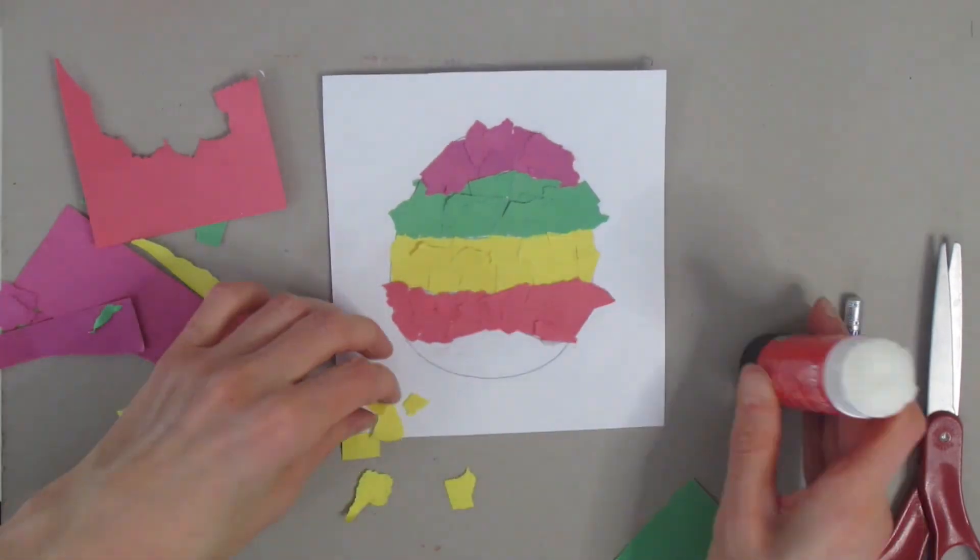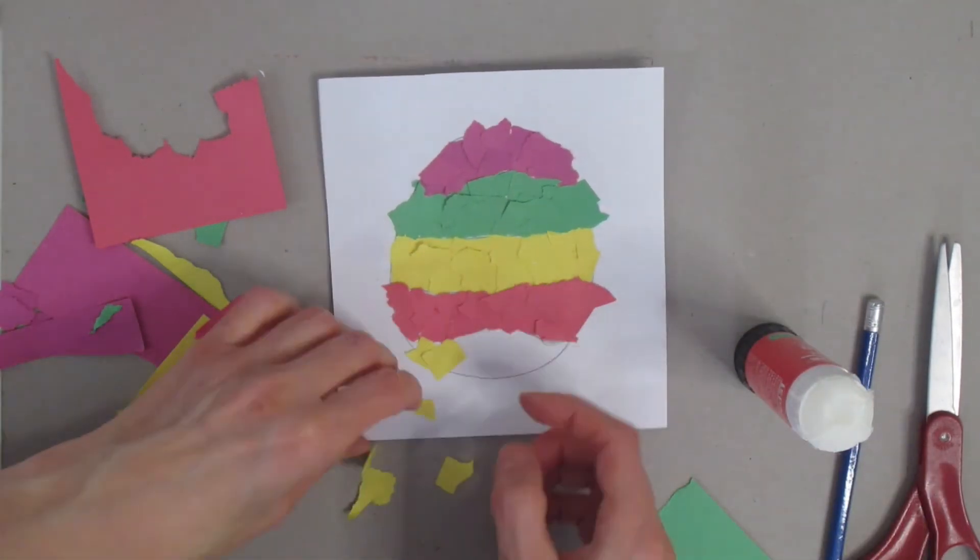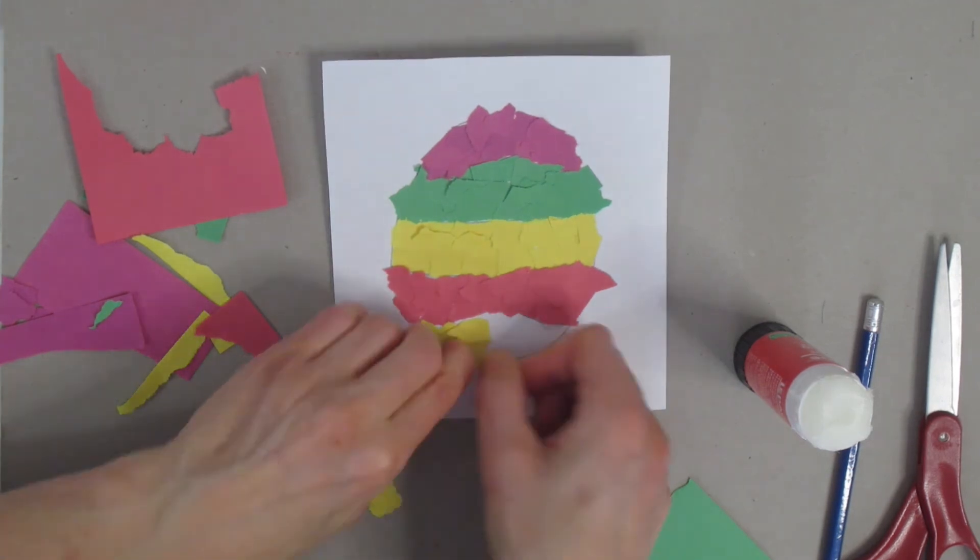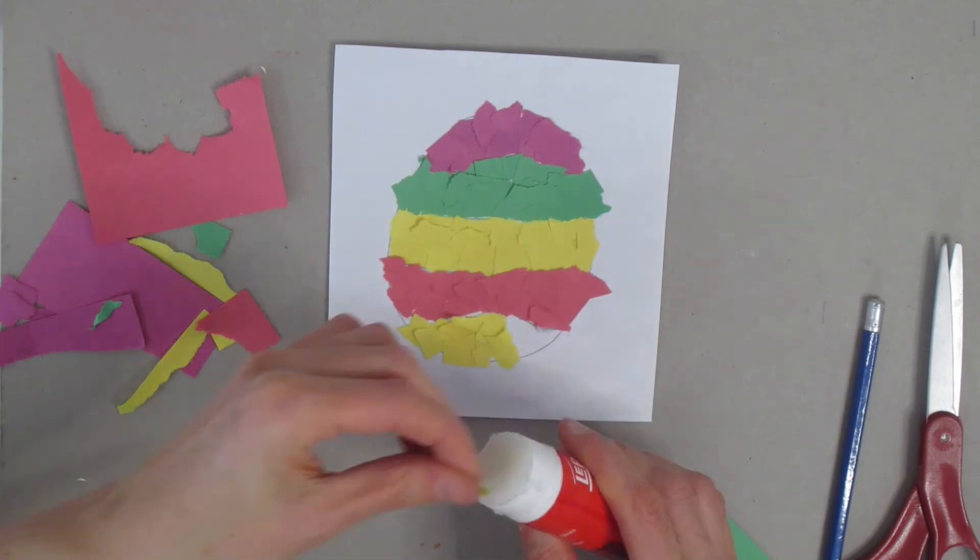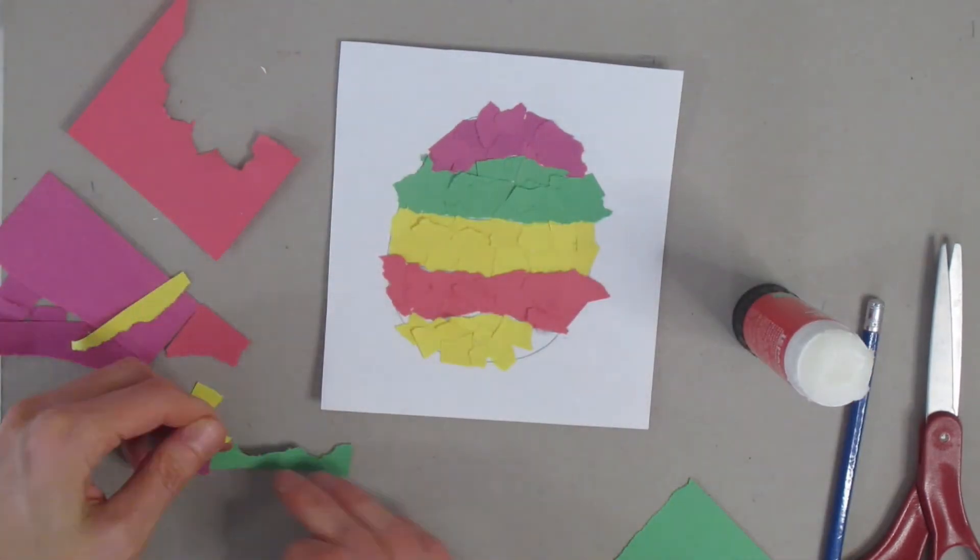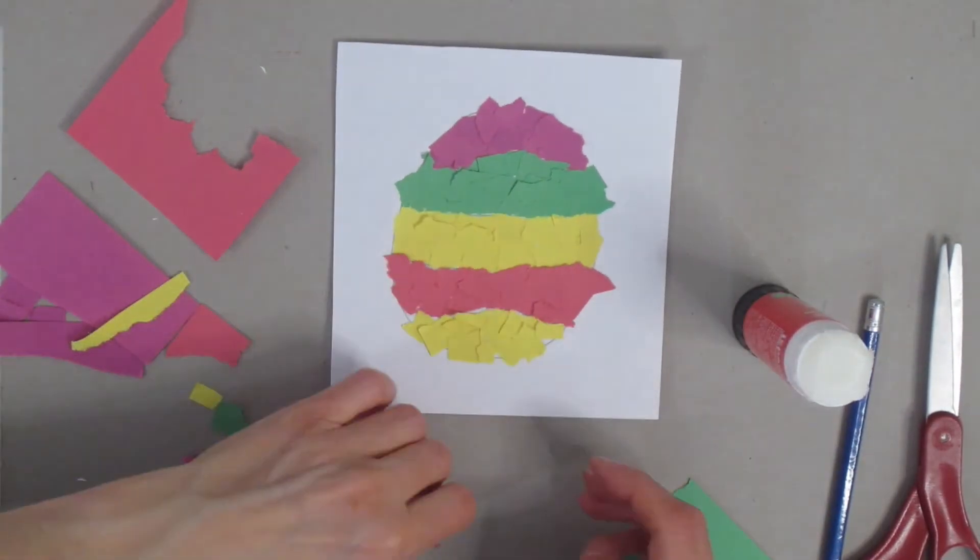So I have one last section to go. I'm adding my glue, filling in my space. You want to make sure all your spaces are filled in with whatever colors you'd like, and then when you're done, check it over to make sure you don't have any white spaces.